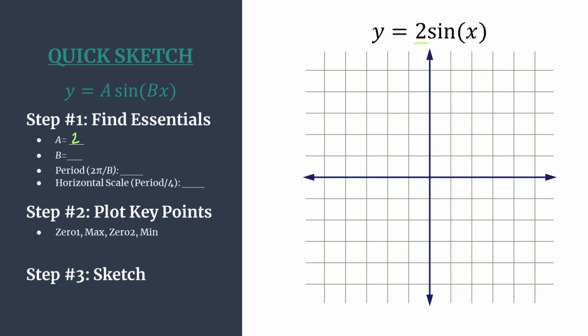Then b, we can see there's nothing in front of that x, so we understand there's a one there. That helps us find the period. It's super easy in this case because the formula is two pi over b, and two pi over one is just two pi. That's the length of one cycle horizontally.